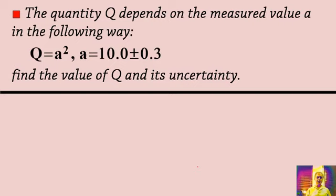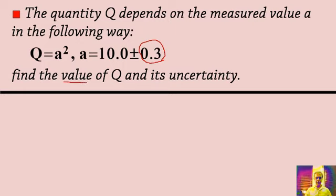The quantity q depends on the measured value a in the following way. Let's have some examples to learn it completely. q is equal to a to the power of 2. Suppose the relation is this, and a is equal to 10.0 plus or minus 0.3, where 0.3 plays the role of the absolute uncertainty for a. Find the value of q and its uncertainty. First, the value — I substitute the value of a in q.